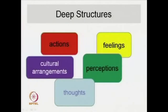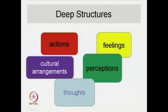Structuralism holds that there are deep structures in us. The deep structures are those of actions, cultural arrangements, thoughts, perceptions, and feelings. Without the deep structures in us — almost a priori in our minds — structuralism holds as a theory that the human race cannot generalize or make general statements about cultural phenomena, and everything would remain chaotic. So going by the deep structures of perceptions, thoughts, cultural arrangements, feelings, and actions, we try and do structural analysis of culture.